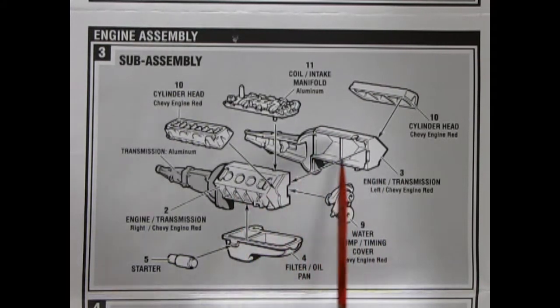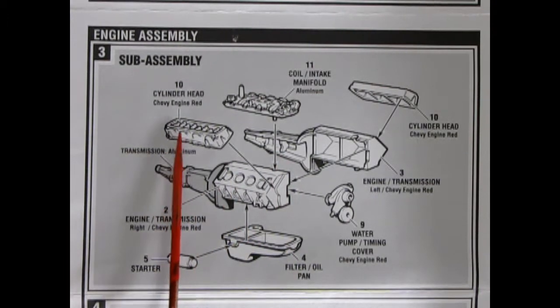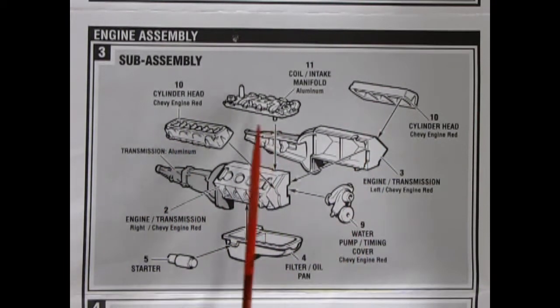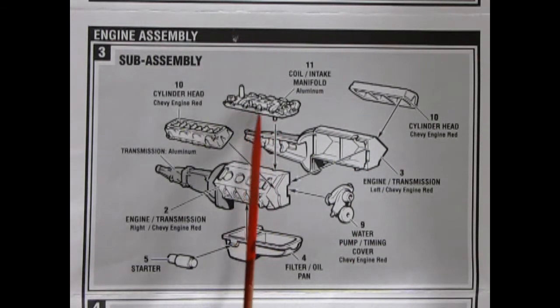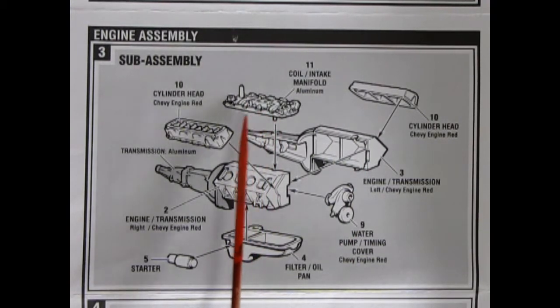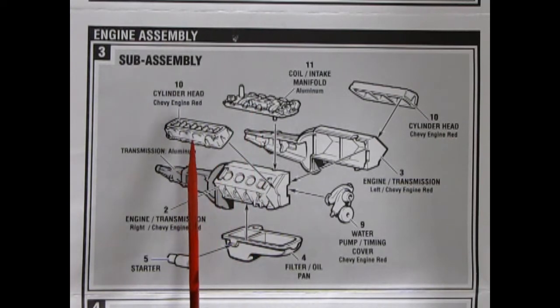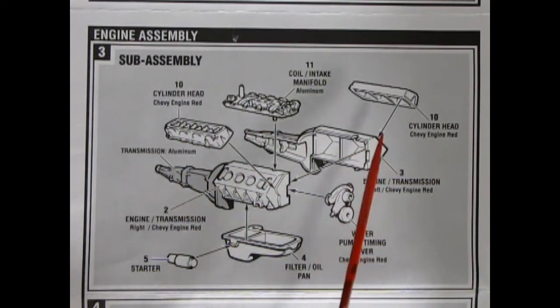Anyway, we have a left and right hand side engine block with the transmission molded in place. We've got the nice cylinder heads with the rockers inside for our valves. The coil and intake manifold. And, of course, we've got our call-out. So, this is aluminum. Chevy engine red for your cylinders and engine block.